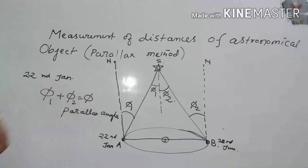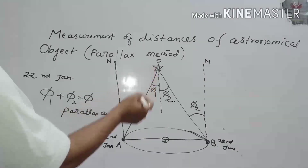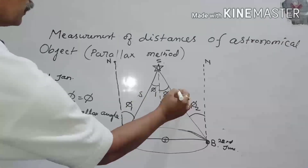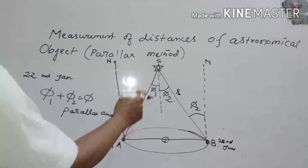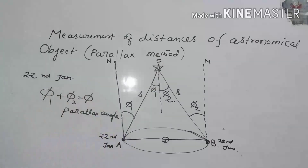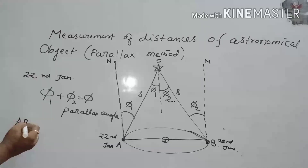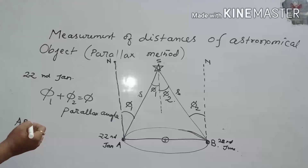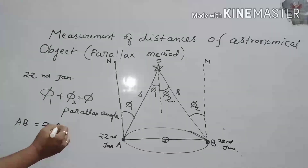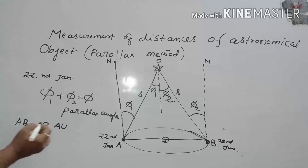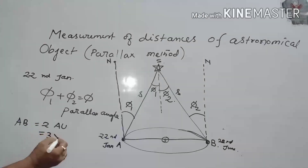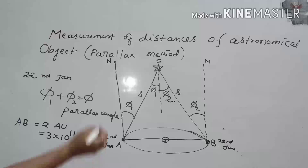Once we measure phi, we can calculate the distance S between the star and Earth. The length of line AB is equal to 2 astronomical units, which is equal to 3 × 10¹¹ meters.